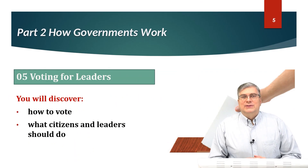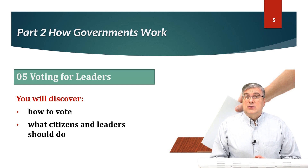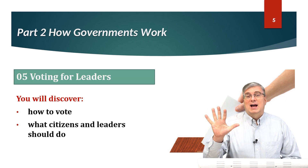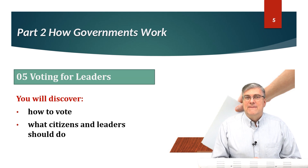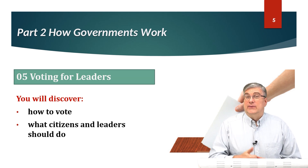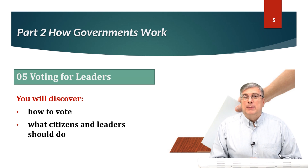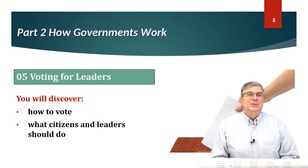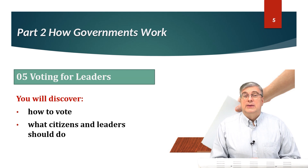Hello everyone, welcome back to American Textbook Reading Series. I'm Brian Stewart. We're looking at Social Studies Book 3, Lesson 5. This lesson is about voting for leaders. You will discover how to vote and what citizens and leaders should do — this is part of the democratic process we will be looking at today. Let's start with the vocabulary.